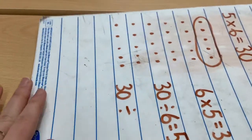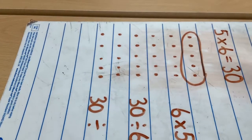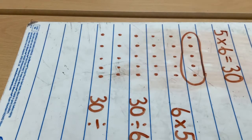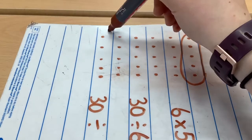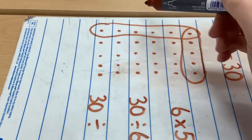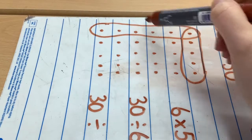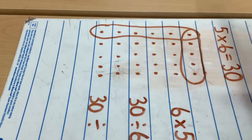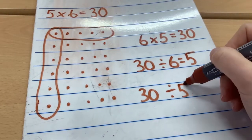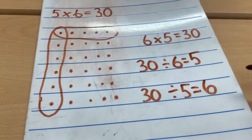Then I would flip my array once more. And I can see that I've got 5 rows this time. So I'm doing 30 divided by 5. And I'm going to circle that top row and count. 1, 2, 3, 4, 5, 6. So 30 divided by 5 equals 6.